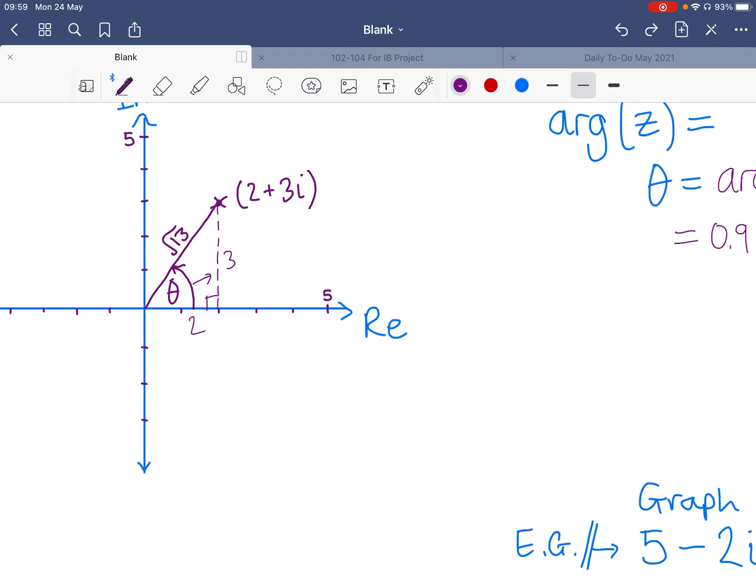So, 5 is here, minus 2i would be down here. So, that's going to be there.